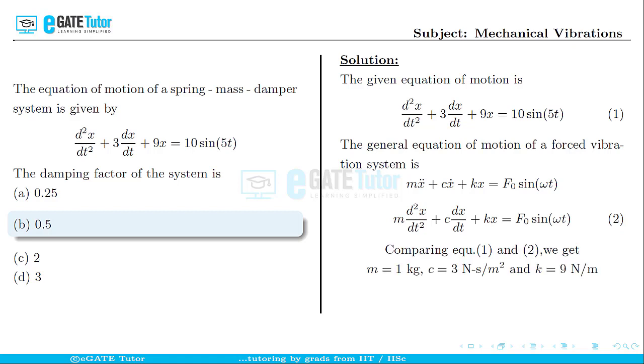Similarly, when we compare the coefficients of the term dx/dt, we get c = 3 N·s/m². And similarly, when we compare the coefficients of x, we get k = 9 N/m.